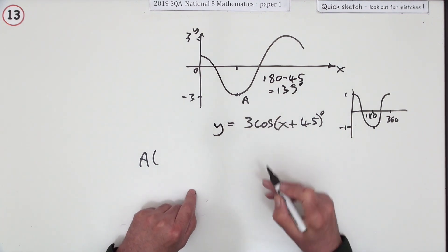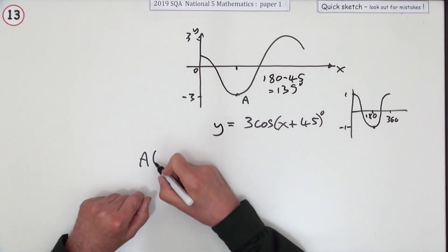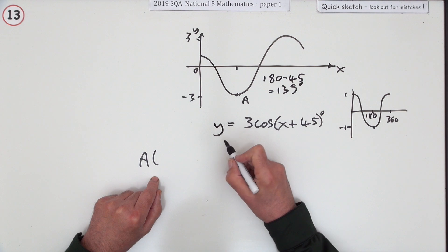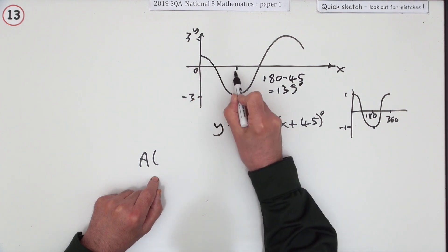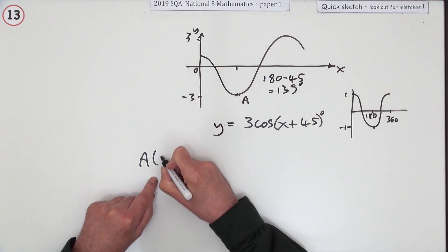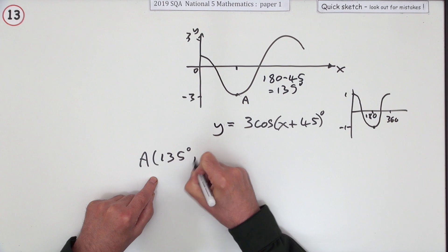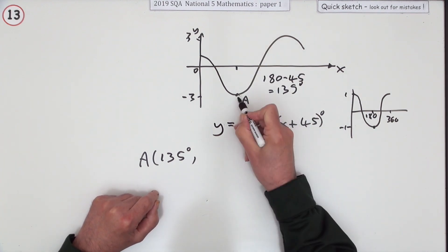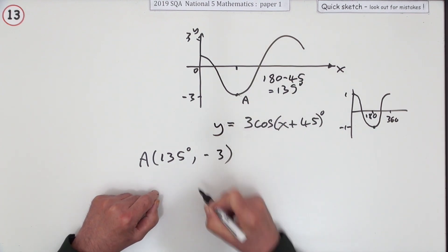So that means the coordinates of A are going to be - let's get this right this time - the coordinates of A are going to be the distance along first, which is an angle, so that will be 135 degrees, and then the y-coordinate down the way, which takes you all the way down to negative 3.